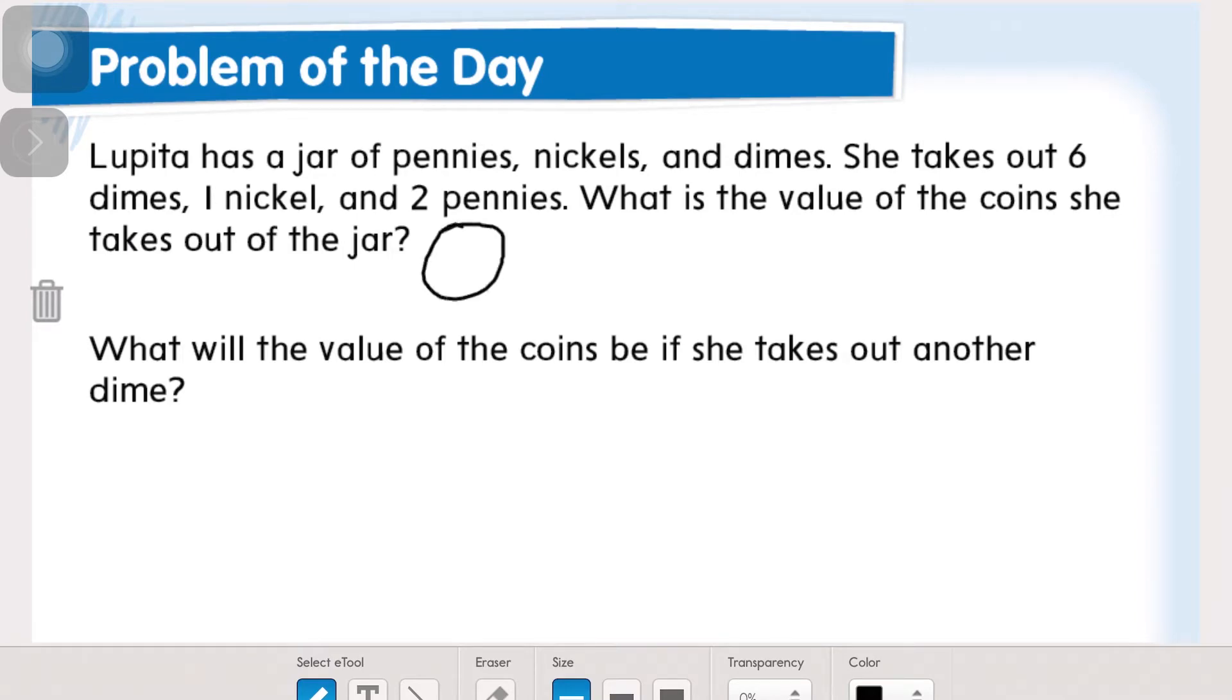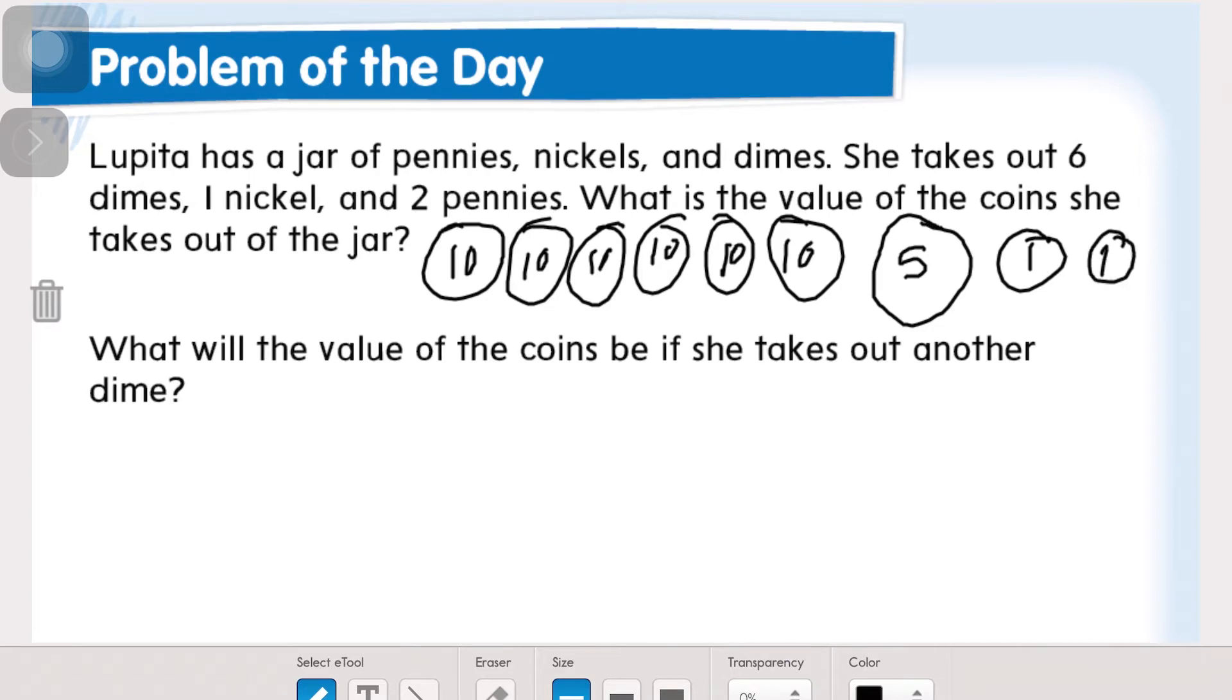For this one I'm going to use the problem solving strategy of drawing a picture because I think that'll help me. So she has six dimes, one nickel, and two pennies. Now I can add these up: 10, 20, 30, 40, 50, 60, 65, 66, 67. So if we added another 10 that would give us 77 cents.